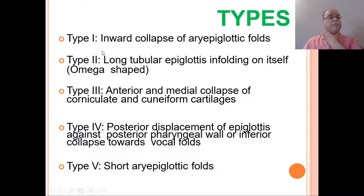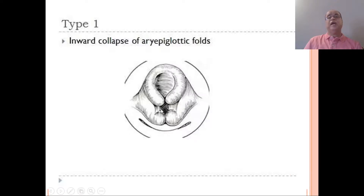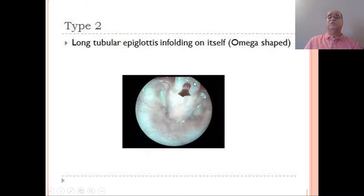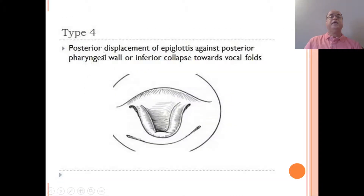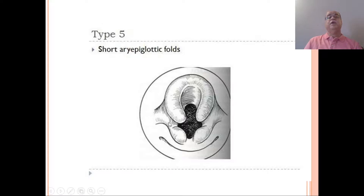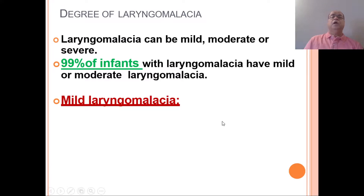According to the anatomic abnormalities, different types of laryngomalacia have been described. Type 1 is inward collapse of the aryepiglottic folds leading to the omega-shaped epiglottis. Type 2 involves a long, tubular, more prominent epiglottis. Type 3 involves anterior and medial collapse of the corniculate and cuneiform cartilages. Type 4 is posterior displacement of the epiglottis against the posterior pharyngeal wall, or inferior collapse toward the vocal cords. Type 5 features very short aryepiglottic folds. Laryngomalacia can also be classified as mild, moderate, or severe.